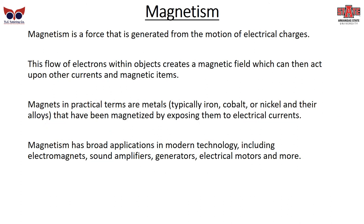Magnetism is a force generated by the motion of electrical charges — when electricity flows, one of the results is magnetism. This flow of electricity creates a magnetic field, which then acts upon other currents and magnetic items. Magnets, in practical terms, are metals that have been magnetized by exposing them to electrical currents; they can generate their own magnetic fields. Magnetism has broad applications in modern technology: electromagnets, sound amplifiers, generators, and motors.